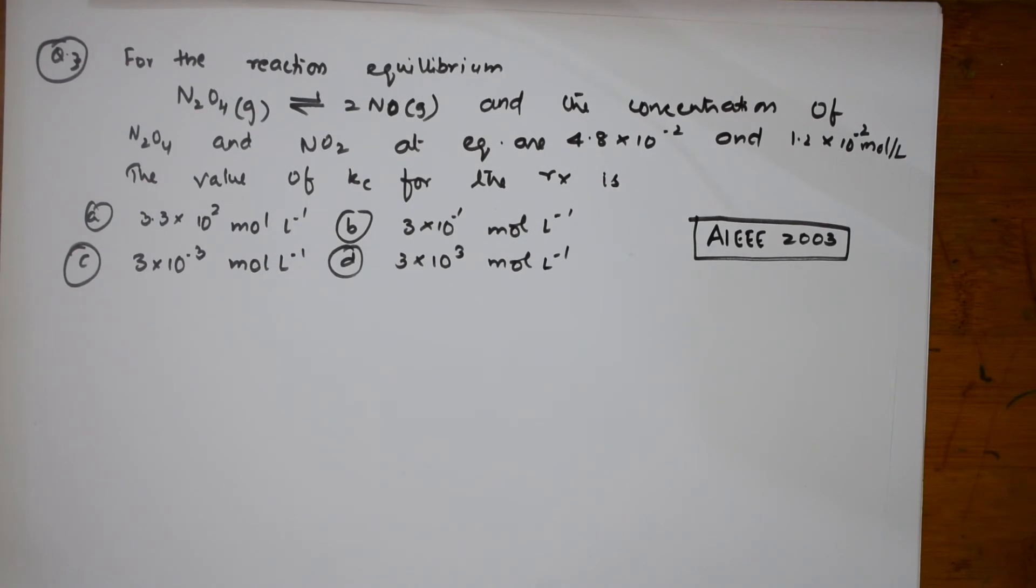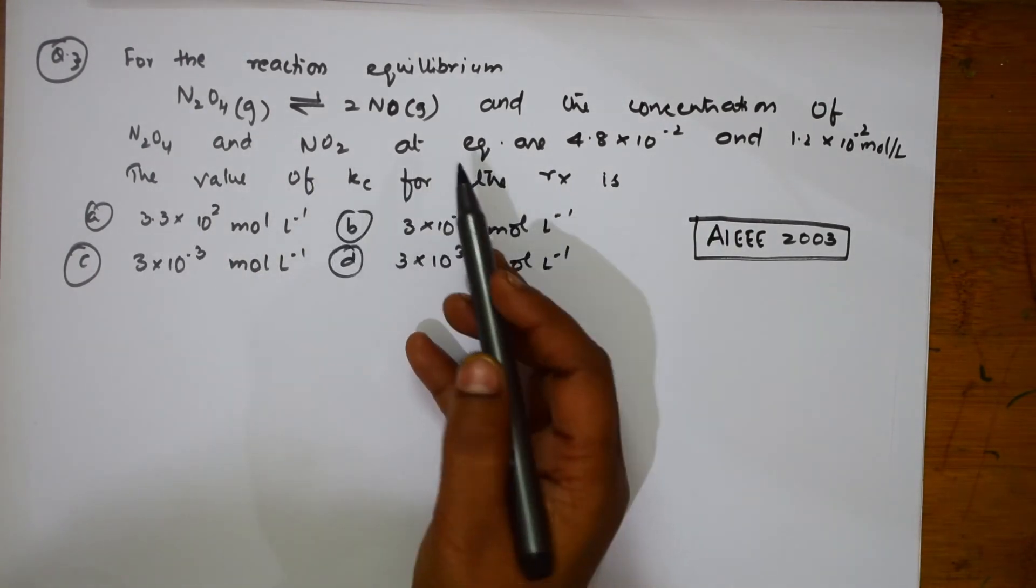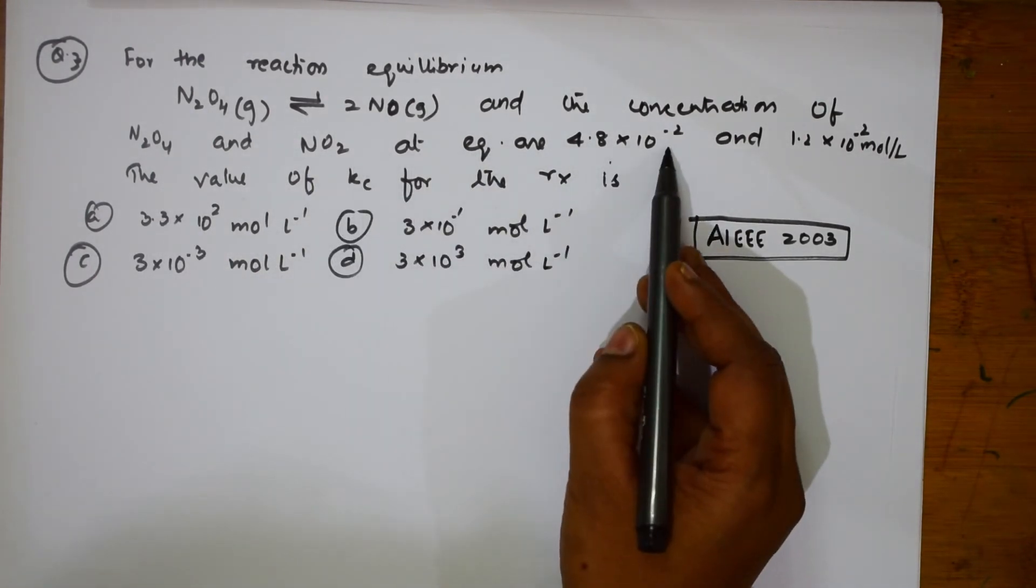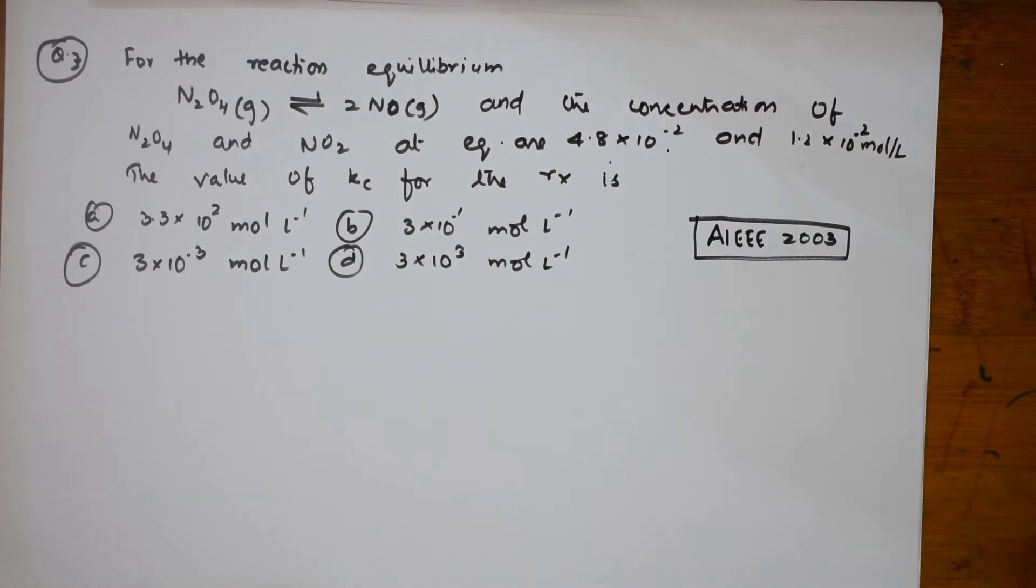Now, let us do one more question which is given here. It's a pre 2003 paper. Here what do they give us? For the reaction equilibrium, they have given one reaction here and the concentration of N2O4 and NO2 at equilibrium are 4.8 into 10 to the minus 2 and 1.2 into 10 to the minus 2 mole per liter. The value for Kc. I need to find the value for the equilibrium constant value for this.